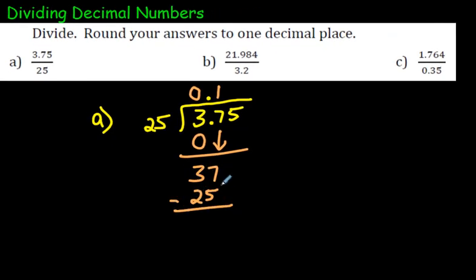Now remember, we subtract these. So 7 minus 5 is 2. 3 minus 2 is 1. Now we bring down the next number, which is the 5. And you may know from experience that 25 times 5 is going to be 125. 25 times 5 is 125. You subtract those two, we are done this question.